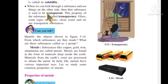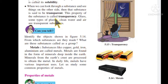When we can look through a substance and see things on the other side, that substance is said to be transparent. This property of the substance is called transparency. Glass, some types of plastic, and clean water are some examples of transparent substances. Transparency is a property of substance.